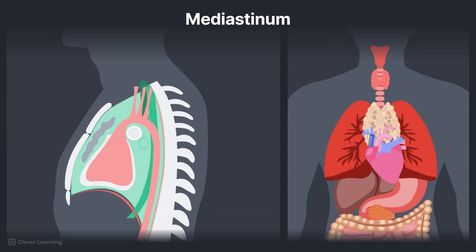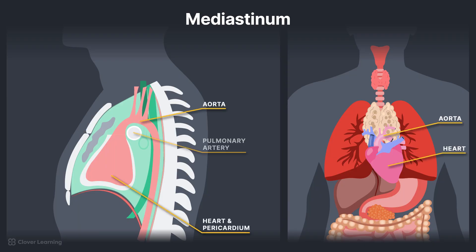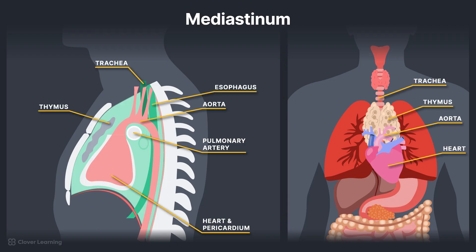The mediastinum is the area of the thorax surrounded by the sternum anteriorly, the spine posteriorly, and the lungs bilaterally. The following structures are contained in the mediastinum: the heart, aorta and great vessels, trachea, esophagus, thymus, lymphatics, nerves, fibrous tissue, and fat.